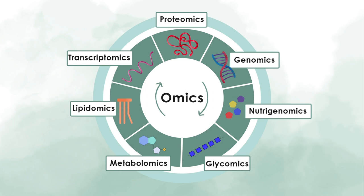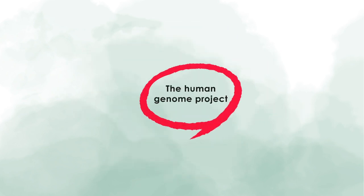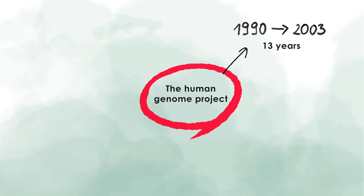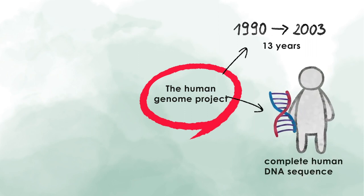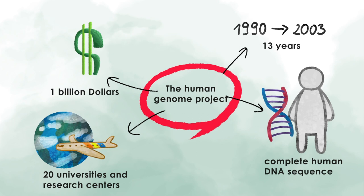But what does that mean? Genomics, for example, looks at all genes of an organism. The Human Genome Project was one of the biggest collaborative projects between many labs worldwide. This project lasted 13 years, from 1990 until 2003, and aimed to sequence the complete human DNA. It involved 20 separate universities and research centers across the world and cost over one billion dollars.